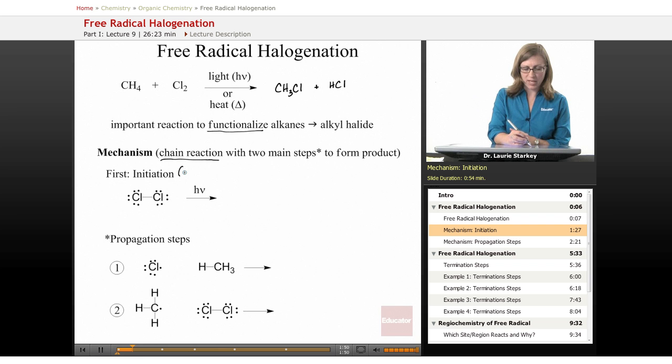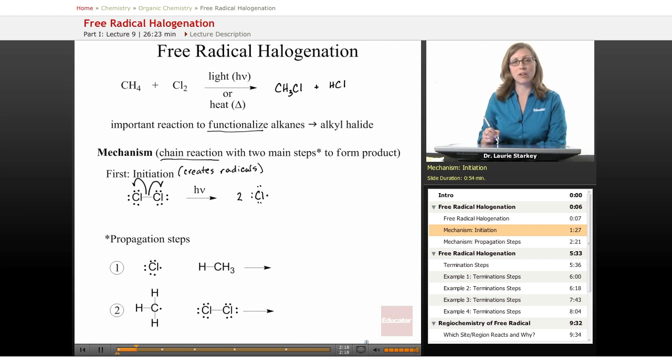Initiation step is one that creates radicals. And the way a radical is created in these reaction conditions is that the chlorine reacts with either the light or the heat. And we're going to break the chlorine-chlorine bond homolytically. One electron is going to go to each side and we're going to form two chlorine atoms. So that's going to be our very first step in the mechanism is to create a radical.